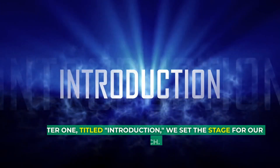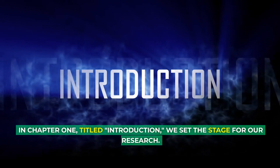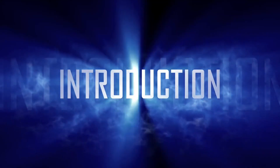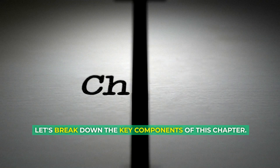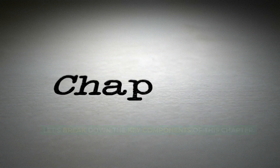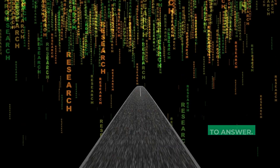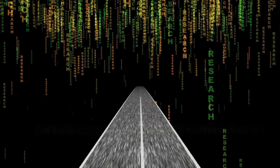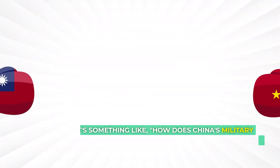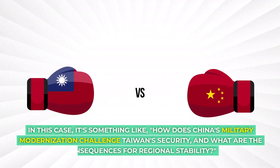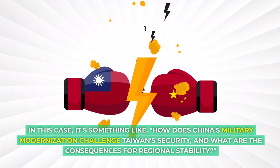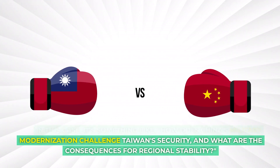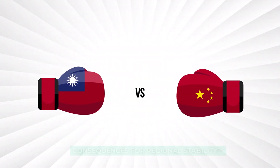In Chapter 1, titled Introduction, we set the stage for our research. Let's break down the key components. The research problem is the question we seek to answer — in this case, something like: how does China's military modernization challenge Taiwan's security, and what are the consequences for regional stability?